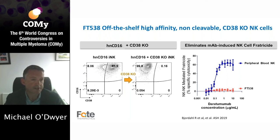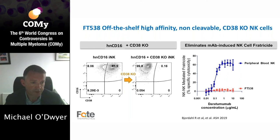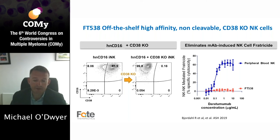However, as NK cells express moderate amounts of CD38, which can go up on activation, they are rapidly depleted by daratumumab. This can be overcome by deletion of CD38. At the last ASH meeting, FATE Therapeutics presented data generated using iPSC-derived NK cells modified to express a non-cleavable form of a high-affinity CD16 along with a knockout of CD38. Using CRISPR-Cas9, they achieved a very efficient knockout of CD38, and the CD38 knockout was highly effective and eliminated fratricide induced by daratumumab.